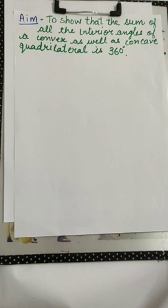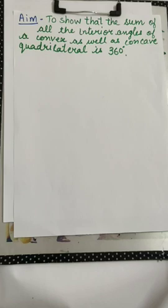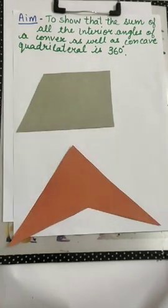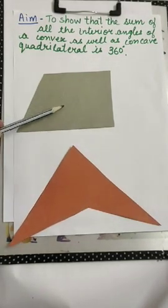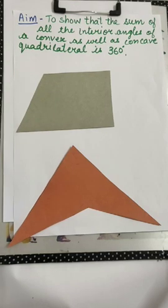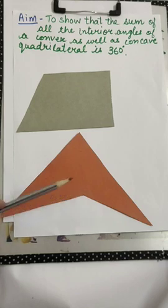Today we will prove that the sum of interior angles of both types of quadrilateral is 360 degrees. I have cut two kinds of quadrilateral. Do you remember what is the name of this quadrilateral? This is convex and this is concave.